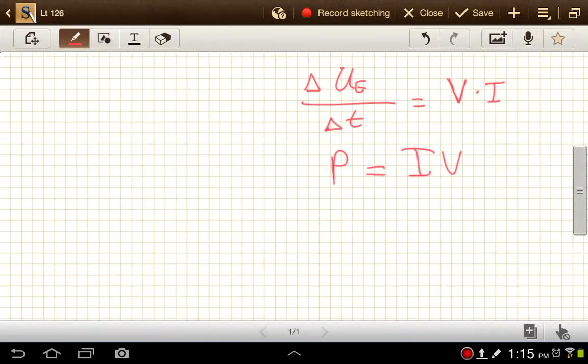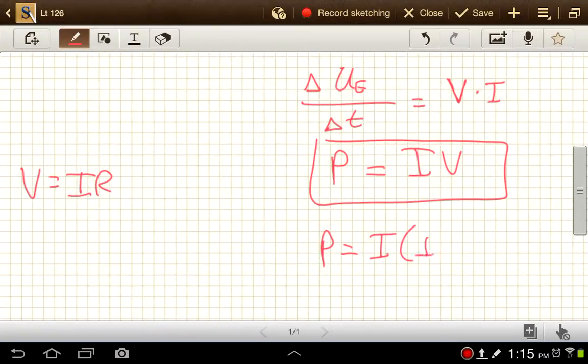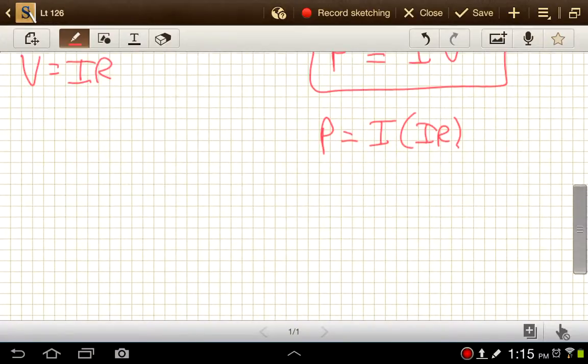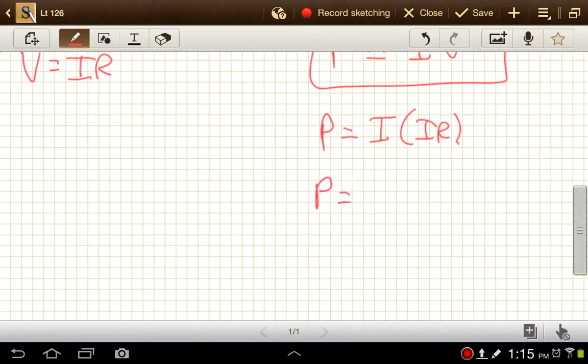Now, we also, we may not have a value for I or for V, so we also need to keep in mind, so this is an important equation. We also need to keep in mind that we have the equation V equals IR. So instead of V over here, I could write that as I times R, and get that power can also be expressed as I squared times R, the current squared times the resistance.